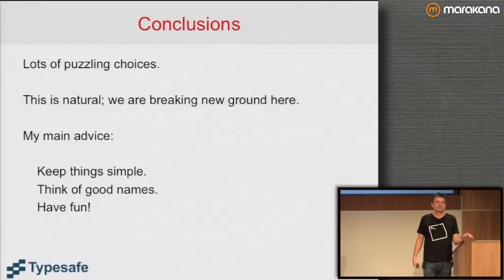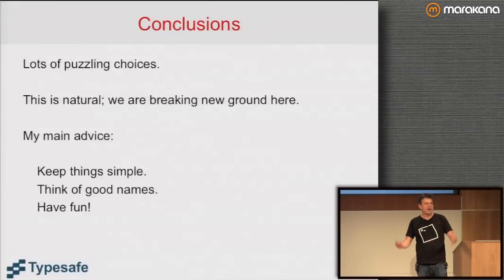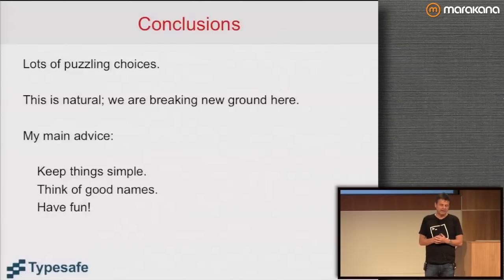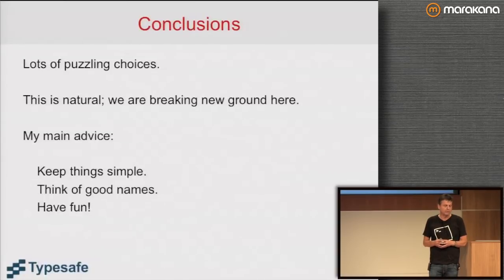Conclusions: you've seen lots of puzzling choices. I didn't want to hide them but go right into them and give you some criteria for choosing. It's natural to have all these choices because we are breaking new ground. My main advice: keep things simple, think of good names — naming is really crucial — think of many names and good names for intermediate results in your program, and have fun. If you follow those three, you're doing all right. Thank you.